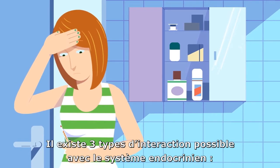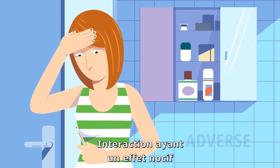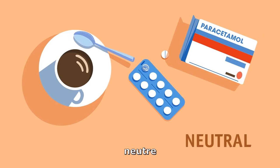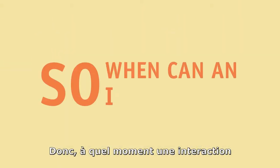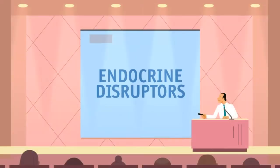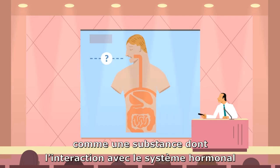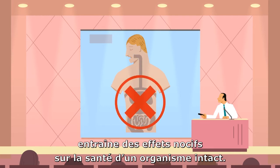There are three kinds of possible interaction with the endocrine system: interaction with an adverse, neutral, or positive effect. So when can interaction be considered as disruption? The World Health Organization defines an endocrine disruptor as a substance whose interaction with the hormone system causes adverse health effects in an intact organism.